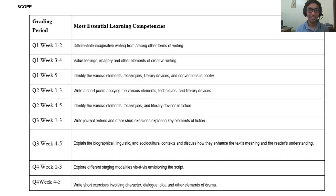The scope covers the most essential learning competencies, or MELCs. For quarter one, week one to two: differentiate imaginative writing from among other forms of writing. For week three and four: value feelings, imagery, and other elements of creative writing. For week five: identify the various elements, techniques, literary devices, and conventions in poetry.